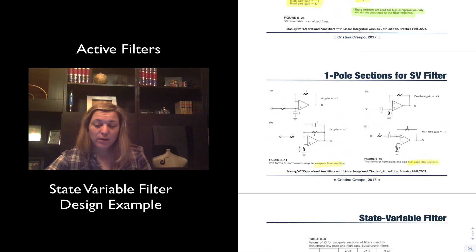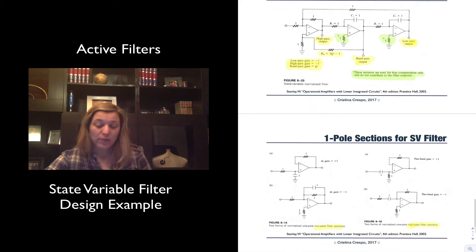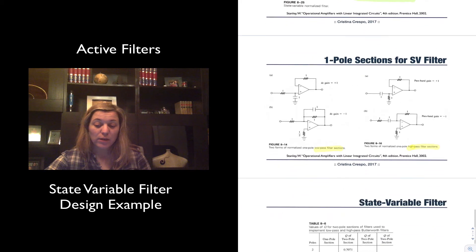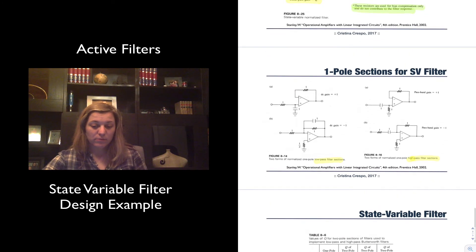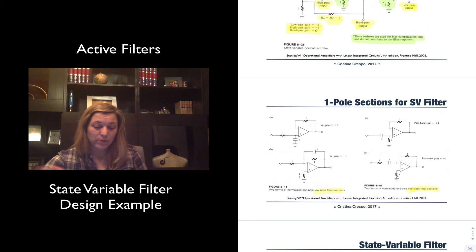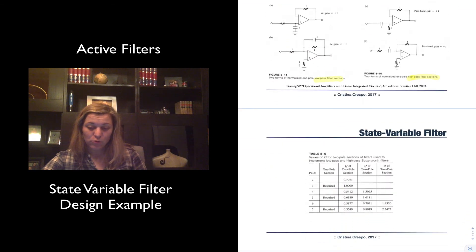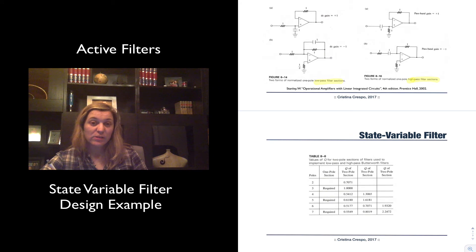And then, based on that, based on the two-pole and the one-pole sections, we can essentially generate the State Variable Filters of different order by using this table. So tabulated just like before, so for a two-pole filter, basically the value of Q that was determining that resistor, resistor 3Q-1 down here, the value of Q will be 0.7071.